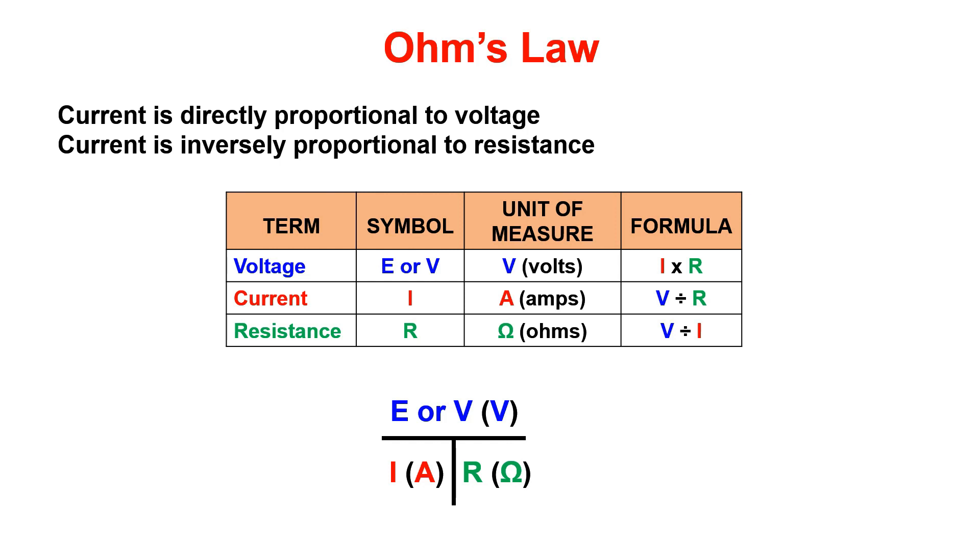The second law is that current is inversely proportional to resistance. This means that with no change in voltage and resistance were to decrease, then current would increase and vice versa. Resistance and current are always going to do the opposite of each other.